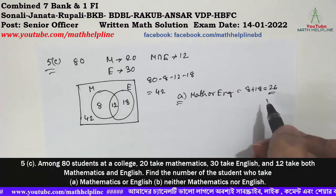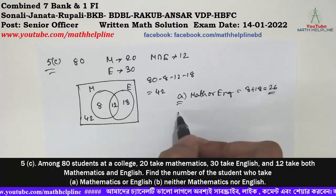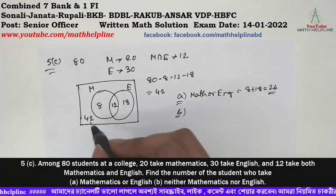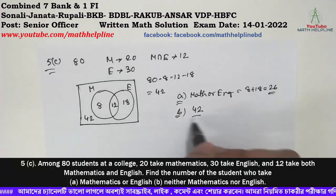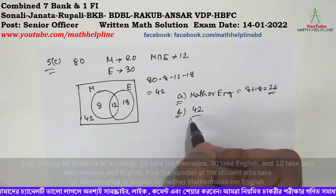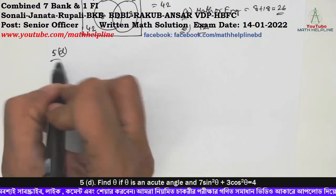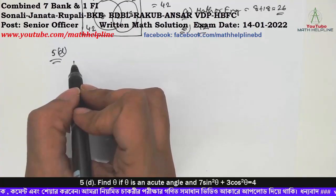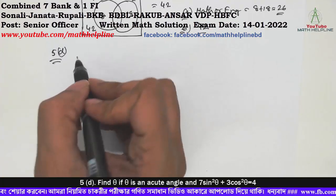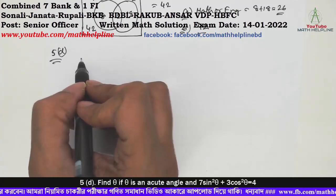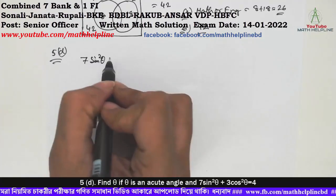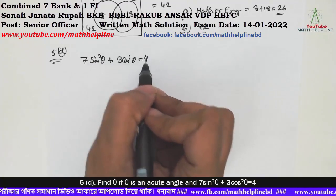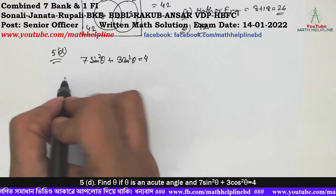The next problem: 7 sin2θ plus 3 cos2θ equals 4. Find the value of theta.